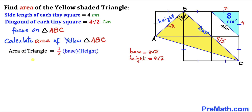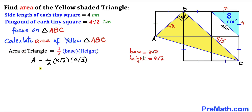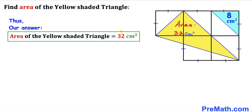Filling in the formula: area equals one half times 8√2 times 4√2. Multiplying √2 times √2 gives 2, so the right-hand side simplifies to 64 divided by 2. Therefore the area of yellow triangle ABC turns out to be 32 centimeters square. That's our final answer.